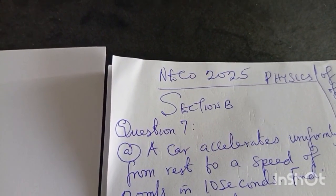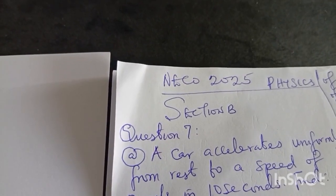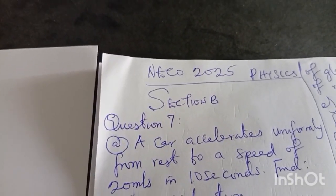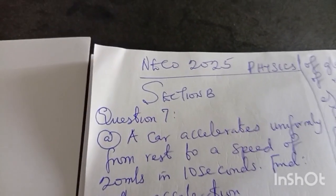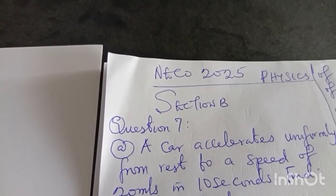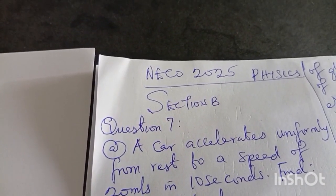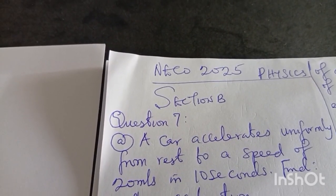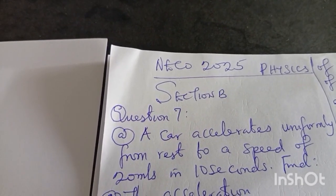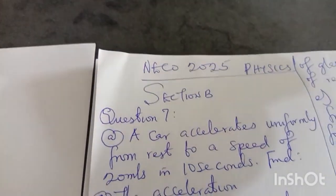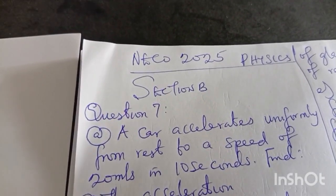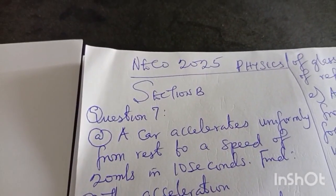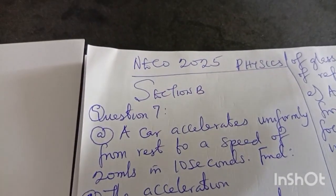We are still in the season of NECO 2025, and physics questions — theory and objective — will soon be written in the next few hours. For our new viewers, please subscribe. We are currently on question seven, meaning questions one through six have already been solved, as well as questions ten, eleven, and twelve. Check our playlist to pick up those videos, and monitor our comment box where we direct you to the next video. Section B continues with question number seven.